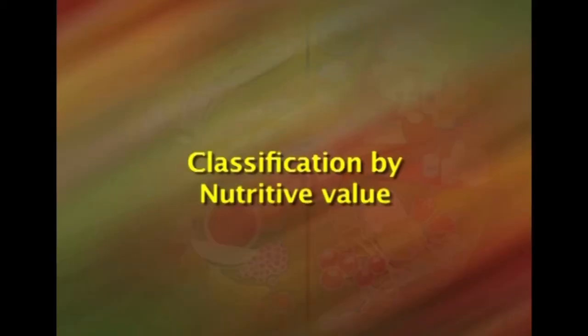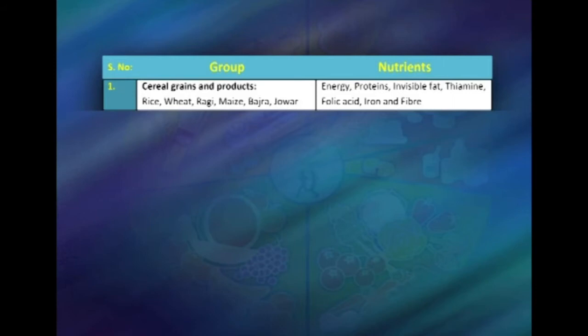The final classification of food is based on nutritive value, with five different basic food groups. The first is cereals and their products, which includes rice, wheat, ragi, maize, bajra, and jowar. The main nutrients obtained from cereals are energy, proteins, invisible fat, certain amounts of fiber, and B complex vitamins.